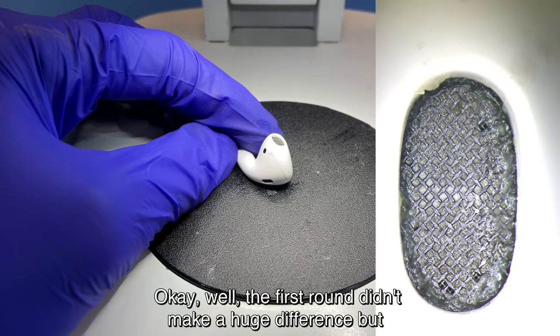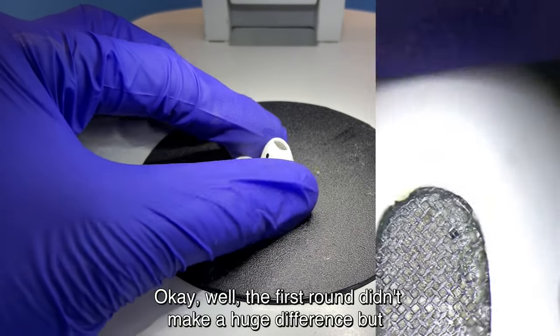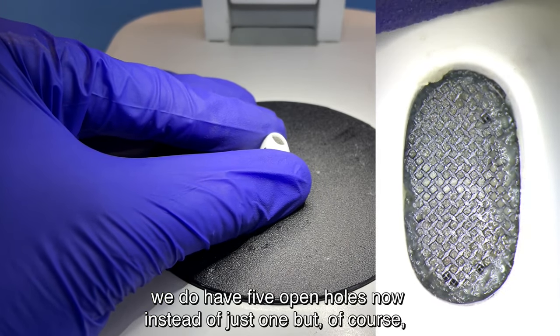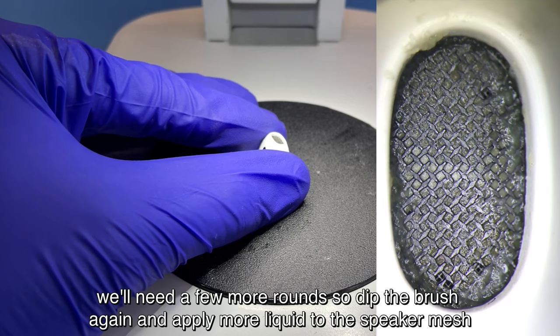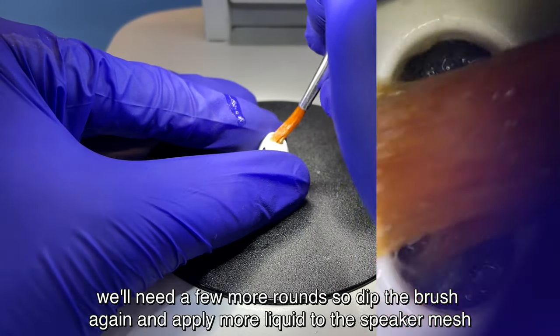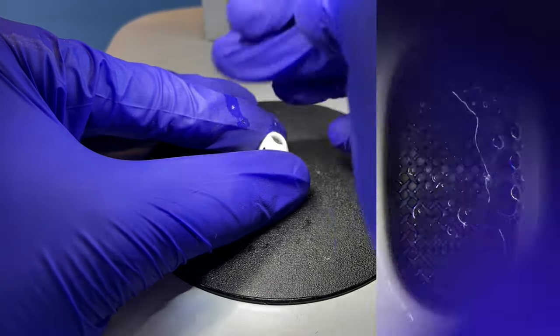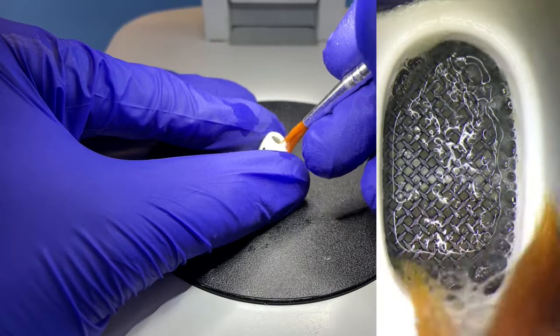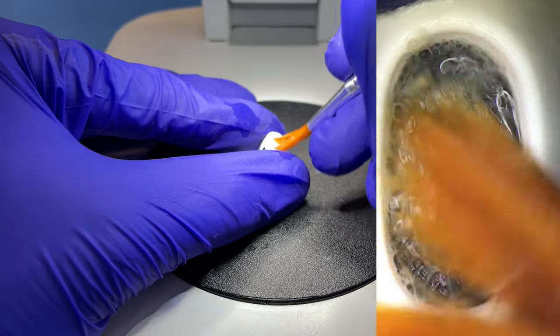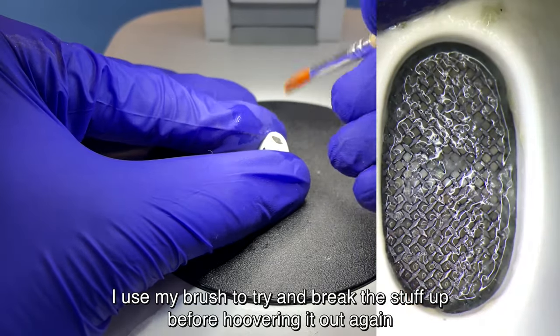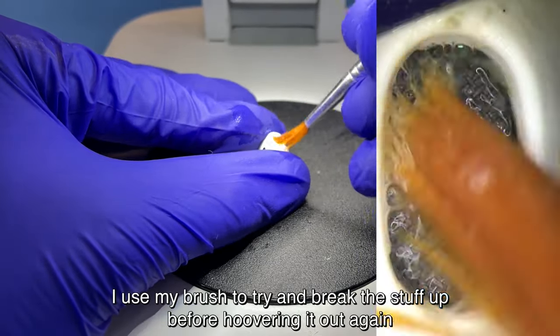Okay, well the first round didn't make a huge difference but we do have five open holes now instead of just one. But of course we'll need a few more rounds, so dip the brush again and apply more liquid to the speaker mesh. Okay so this time instead of just leaving it to soak, I use my brush to try and break the stuff up before vacuuming it out again.